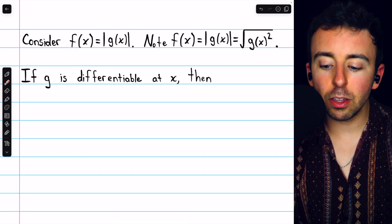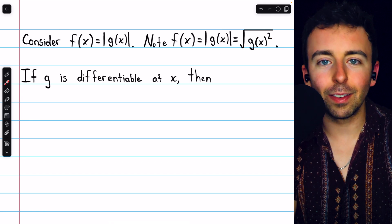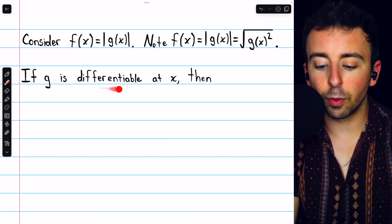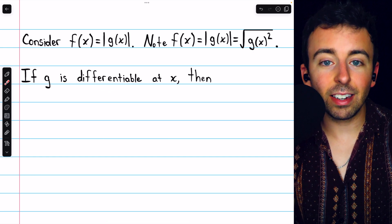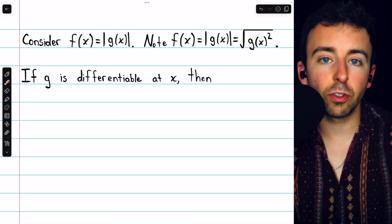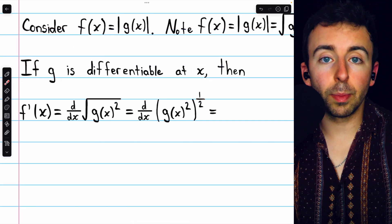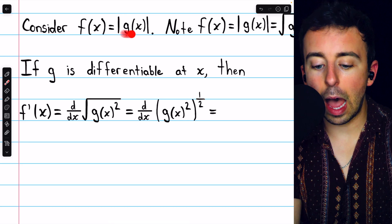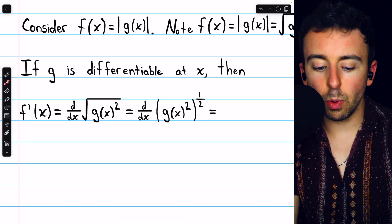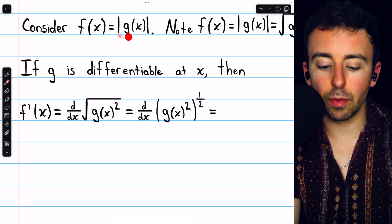By writing the absolute value function as the square root of g of x squared, we can take derivatives using the chain rule. So if g is differentiable at x, then we can indeed take the derivative of the absolute value of g of x. We're saying that the absolute value of g of x is f of x, and what we're trying to find is f prime of x, the derivative.